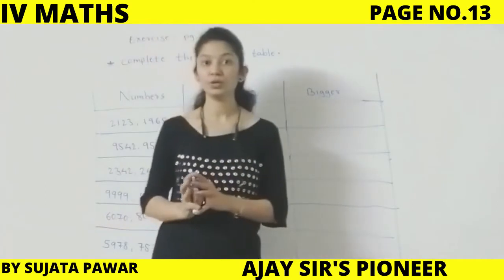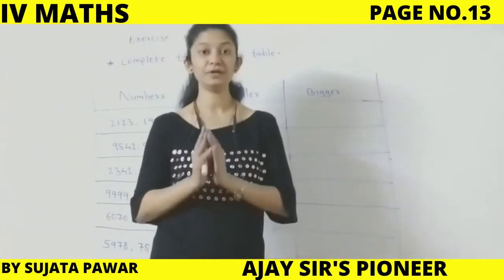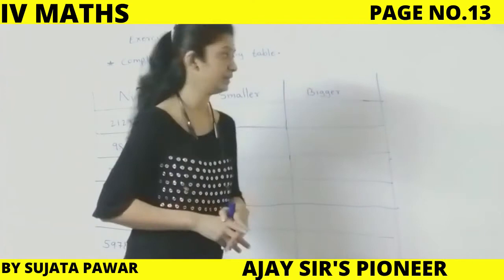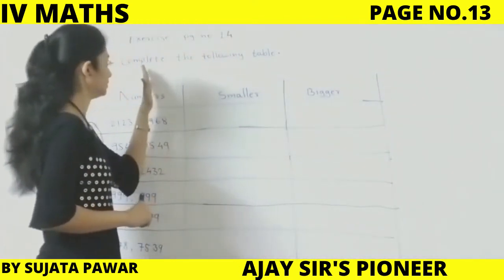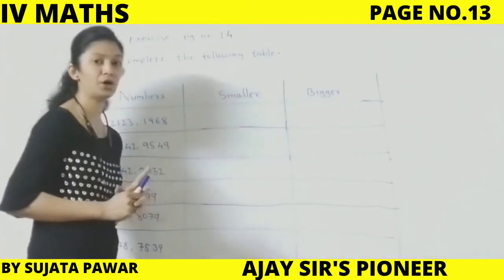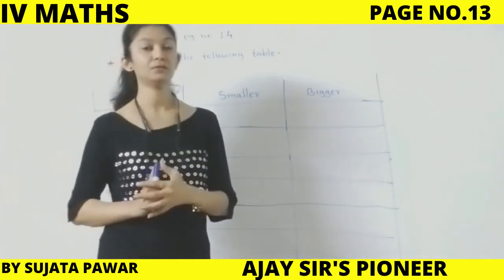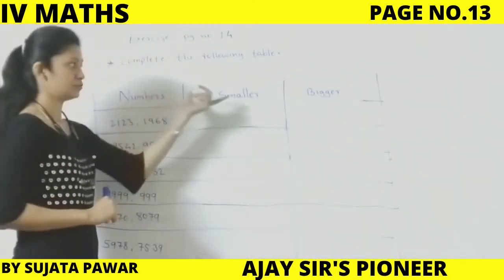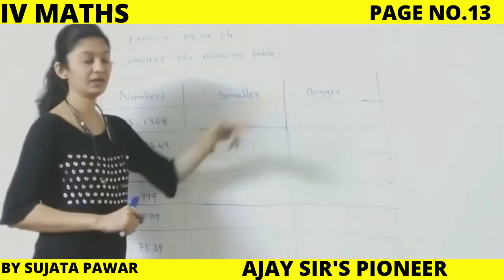Let's solve our next exercise on the same page — page number 14: complete the following table. We need to draw one more table having three columns: Number, Smaller, Bigger.